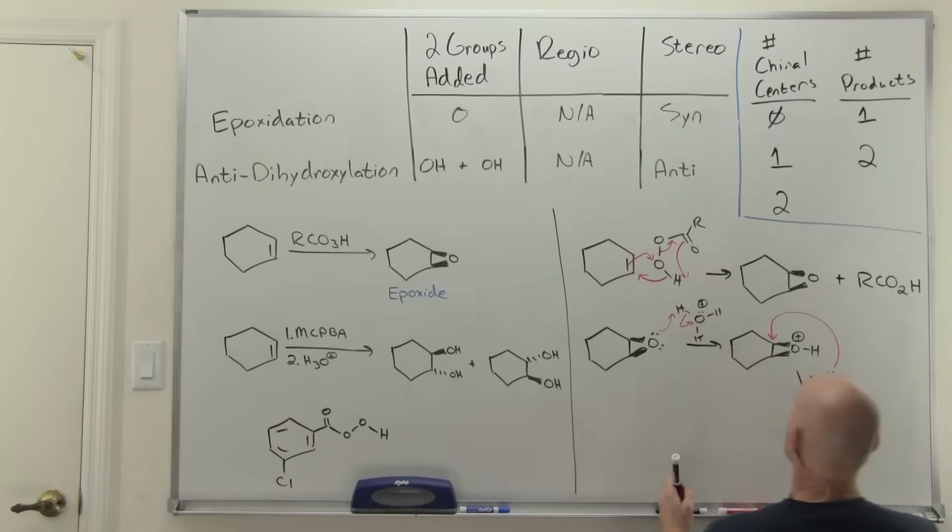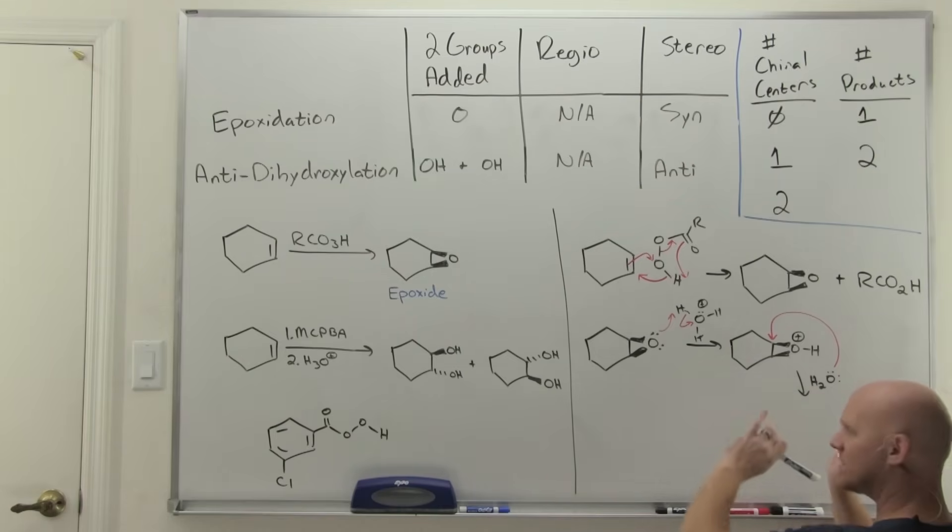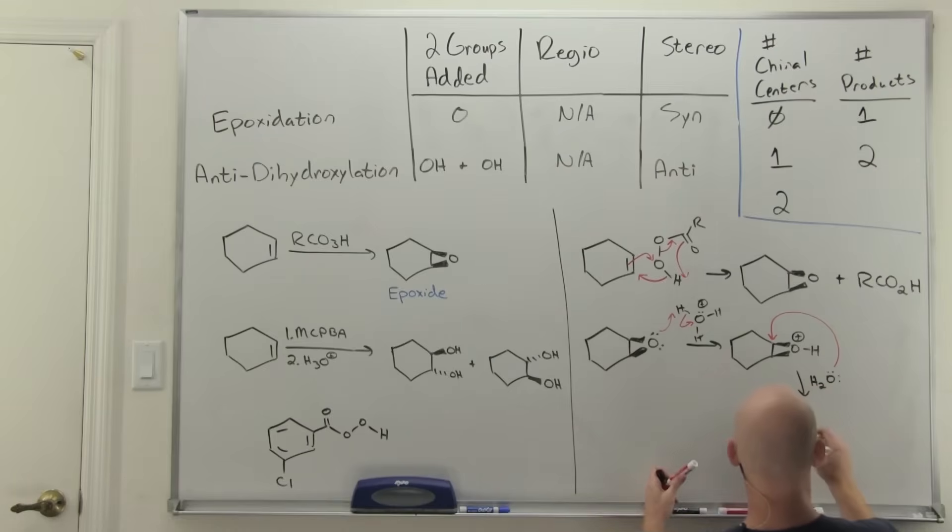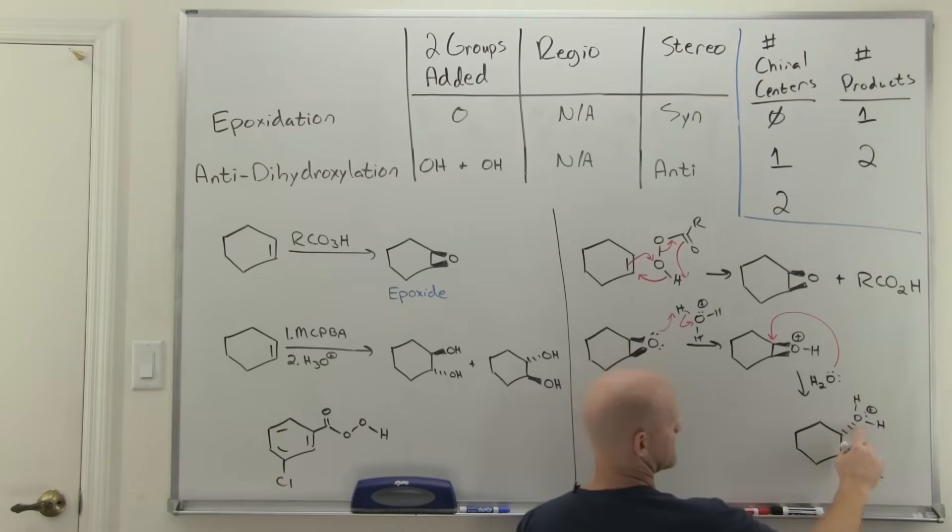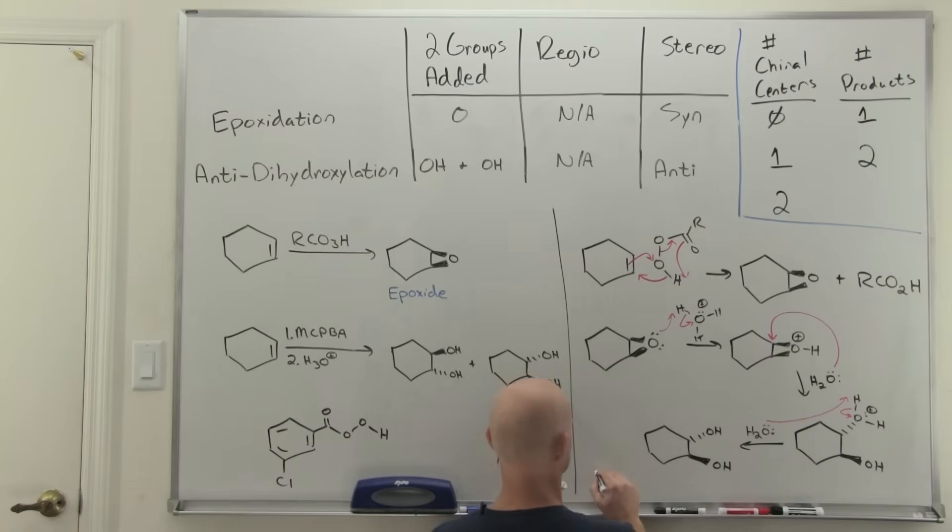Now water is just going to come do backside attack. If it mattered, typically we like to say that it would attack the more substituted one, but I just kind of left it here alone, and I'll treat that in more detail in second semester. Water is going to come and do backside attack there, which is why it ends up on the opposite side. As we've seen already a few times this chapter, when a neutral nucleophile attacks, it ends up with a positive formal charge, and you'll come and deprotonate it with another molecule of your solvent, which in this case is water. That gets us to our final product here and a molecule of hydronium.